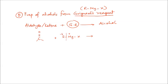Addition will take place across the double bond. In the carbonyl double bond, carbon is the positive part and oxygen is the negative part. When addition occurs, R (the negative end) will go to the carbon atom, and MgX (the positive end) will go to the oxygen.